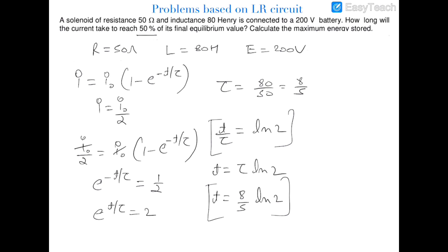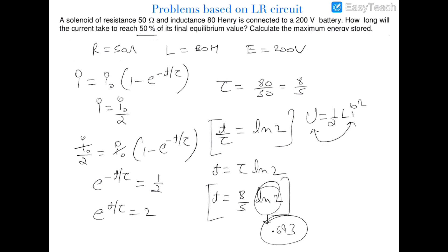The value of ln 2 is 0.693, so its value can be substituted. For the maximum energy stored, U_max = ½L·i₀², where i₀ = E/R. By substituting these values we can calculate the maximum energy stored. Now we move on to the next question.